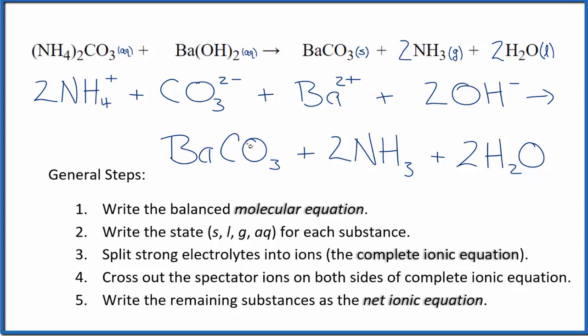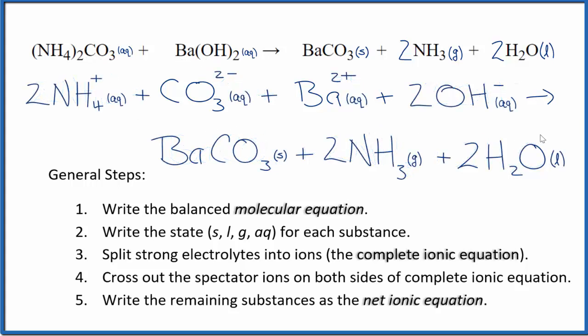I'll clean this up and write the states. We'll have our net ionic equation for ammonium carbonate plus barium hydroxide. So this is the net ionic equation for NH4)2CO3 plus Ba(OH)2.